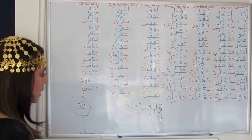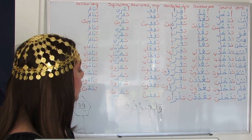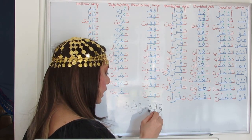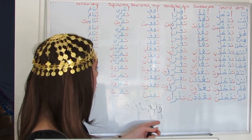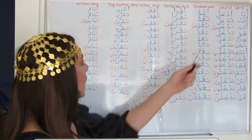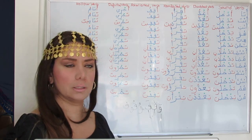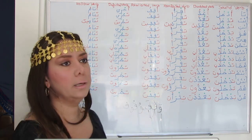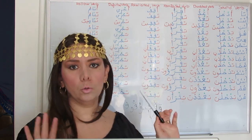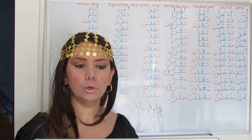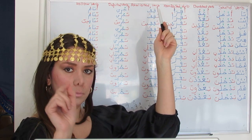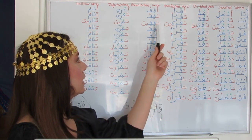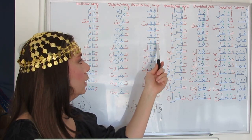As we see, the Waw is omitted during conjugation — we work just with Qaf and Fa, the second and third radicals. Ana aqifu — with a Kasra on the second radical and the indicative Dhamma at the end, Al-Mudari' Al-Marfoo'. Anta taqifu. Anti taqifina. Huwa yaqifu. Hiya taqifu. Nahnu naqifu.